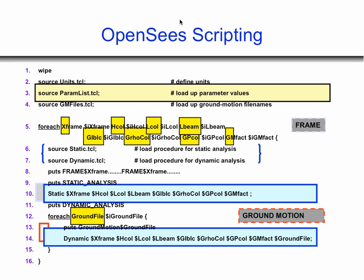What everybody hates about OpenSees is what's called the input — the interface to the application. It's in a scripting language called Tcl. This is probably as complicated as your input file might ever look. By the end of this morning, you'll be able to understand what everything on this slide actually is. Right now, this file is running a parameter study with different frames and different ground motions.